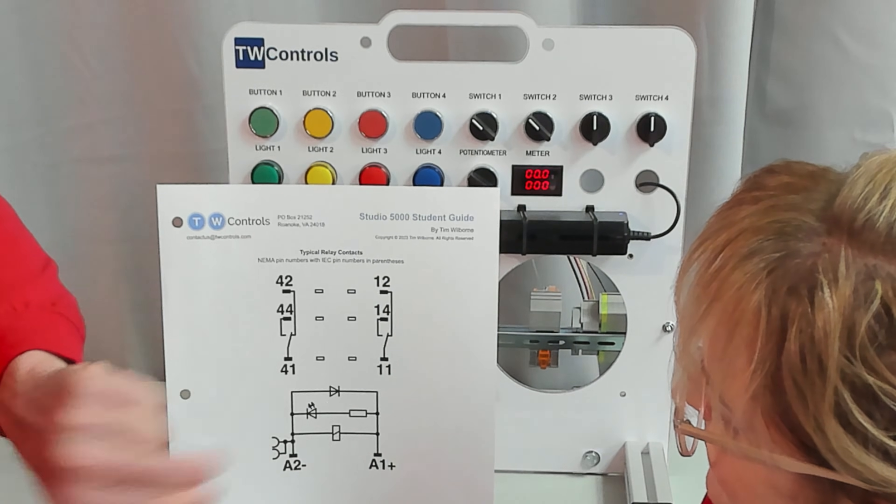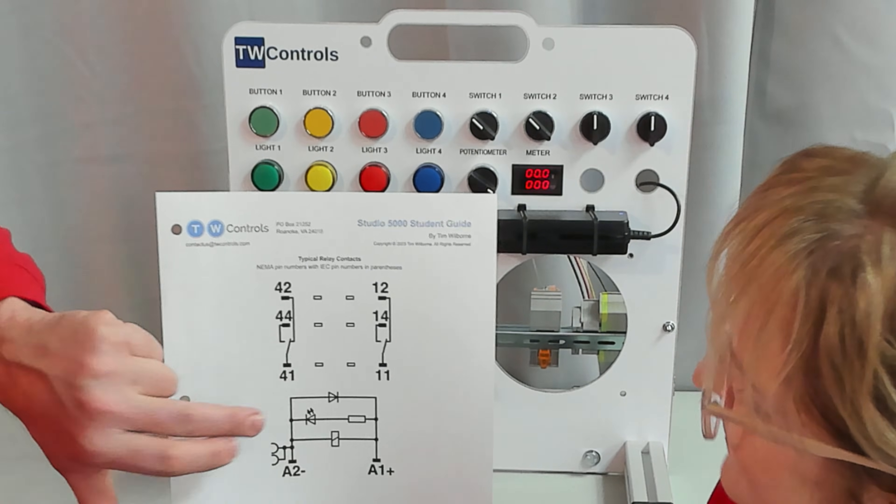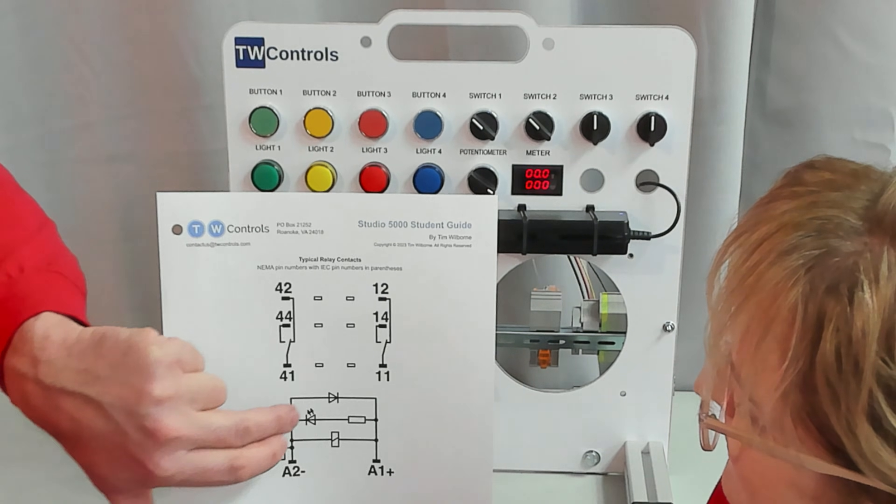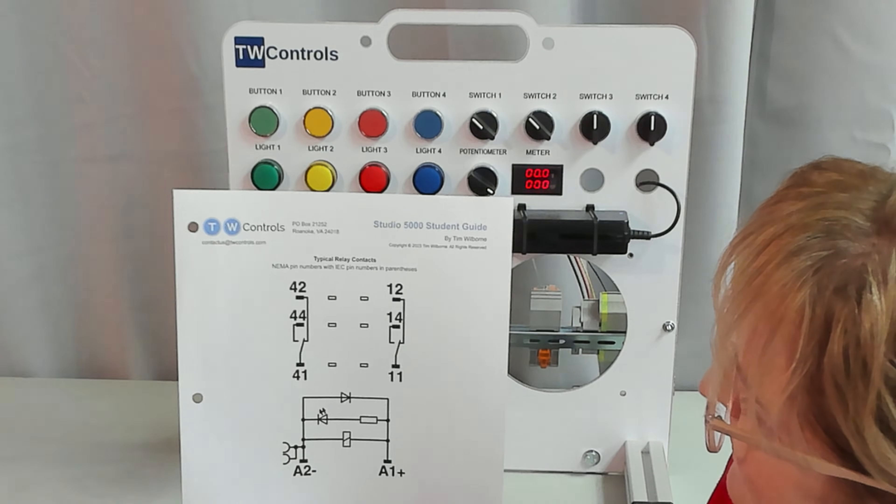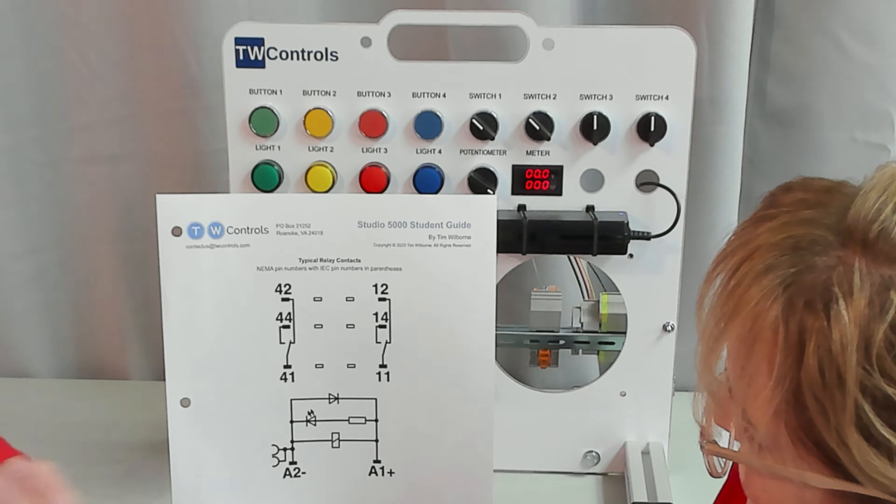And most importantly, you remember from the light exercise, it didn't matter which way we connected them. These right here are called diodes. And when you start seeing these, that's when you know polarity matters. So we will need to put the plus here and the minus here.